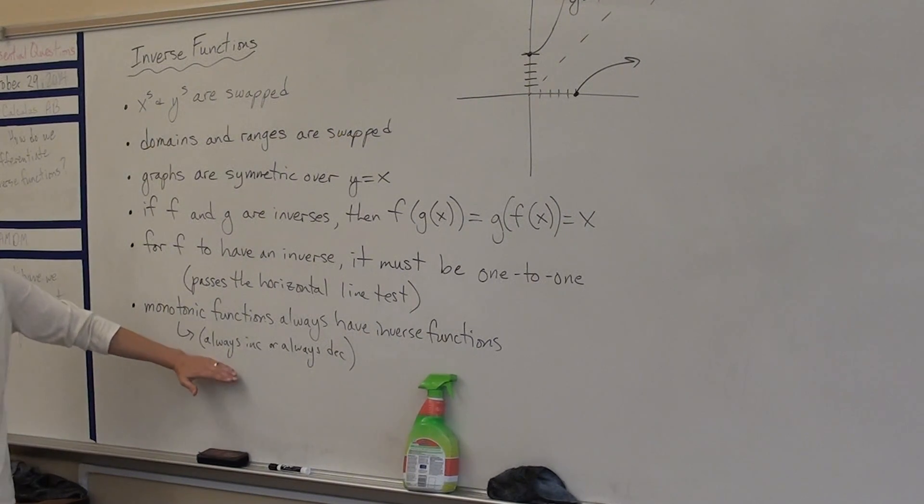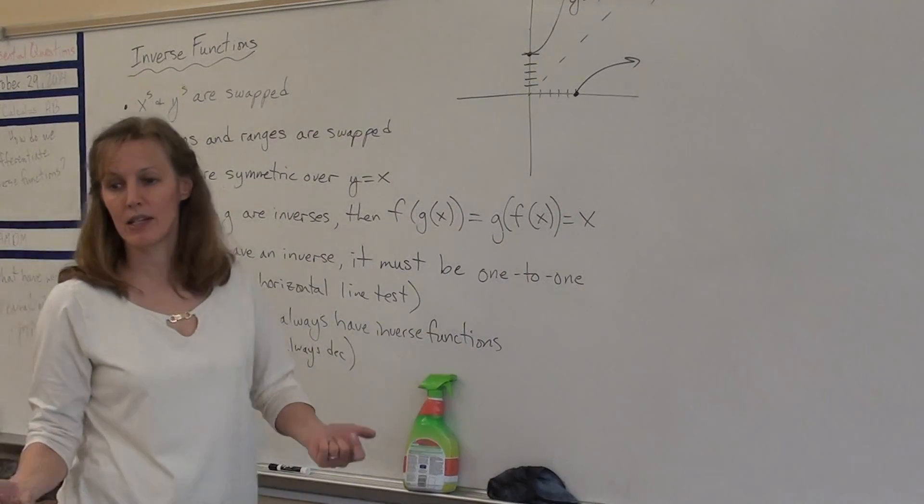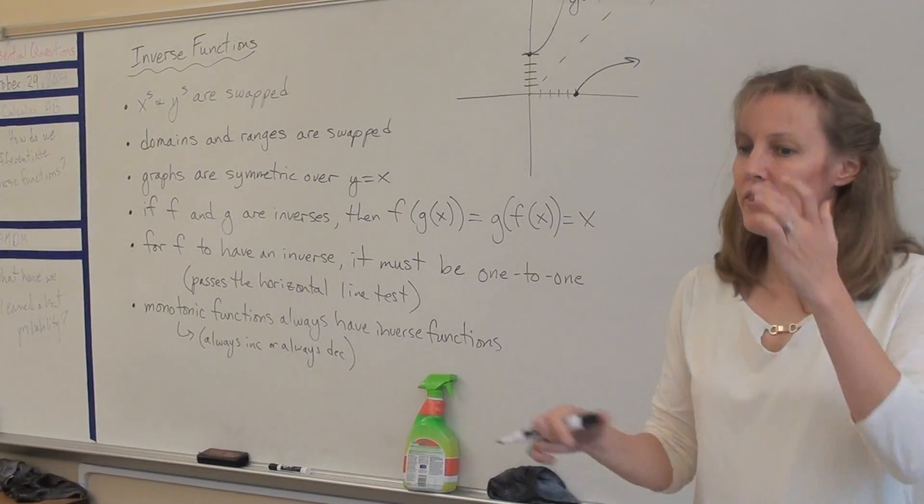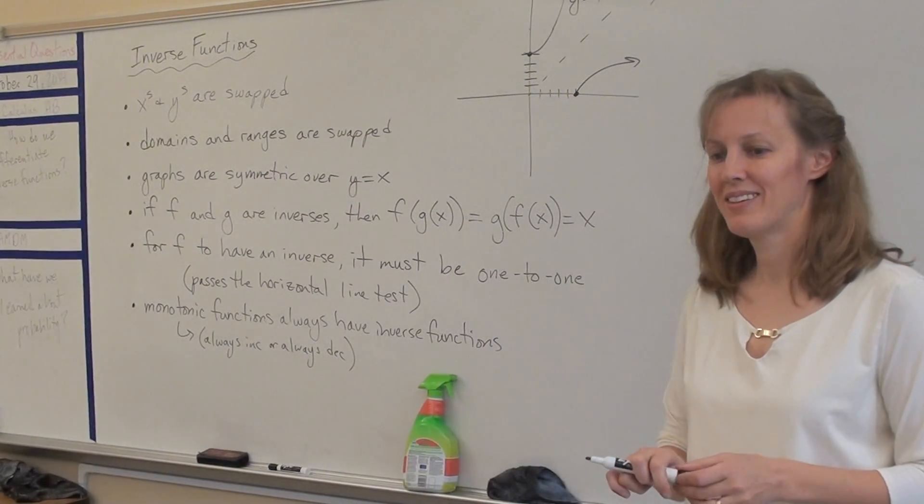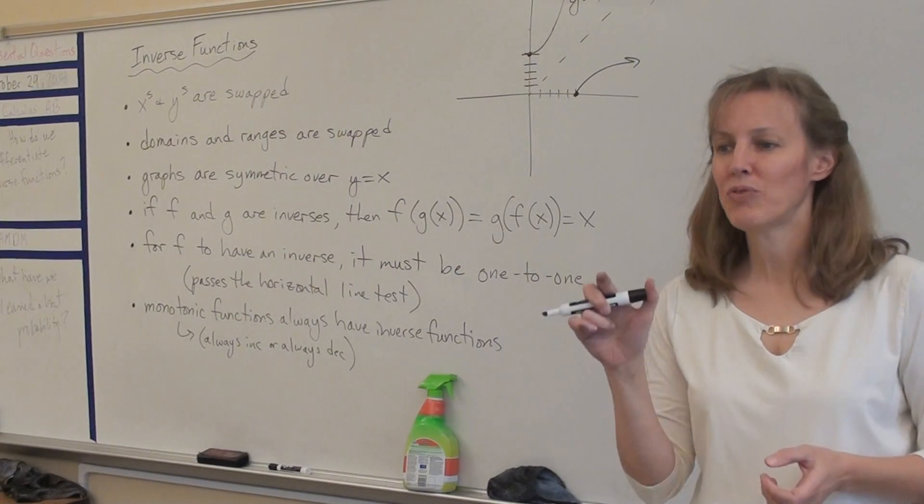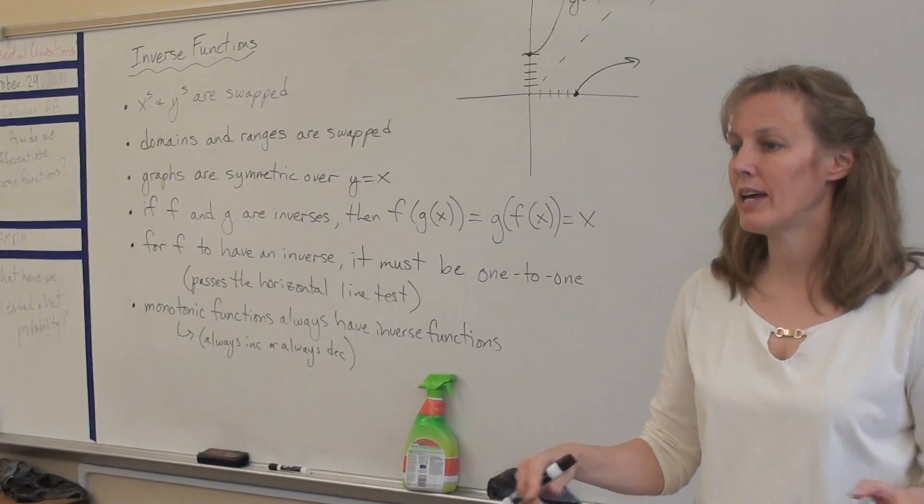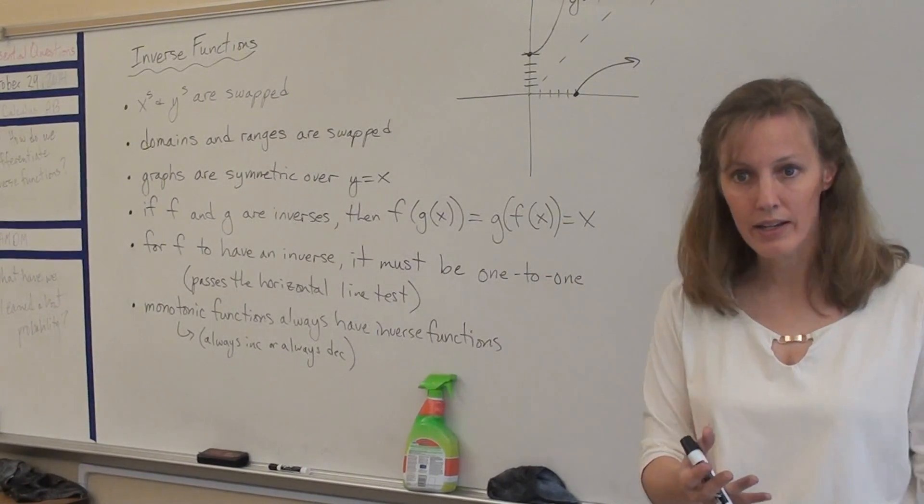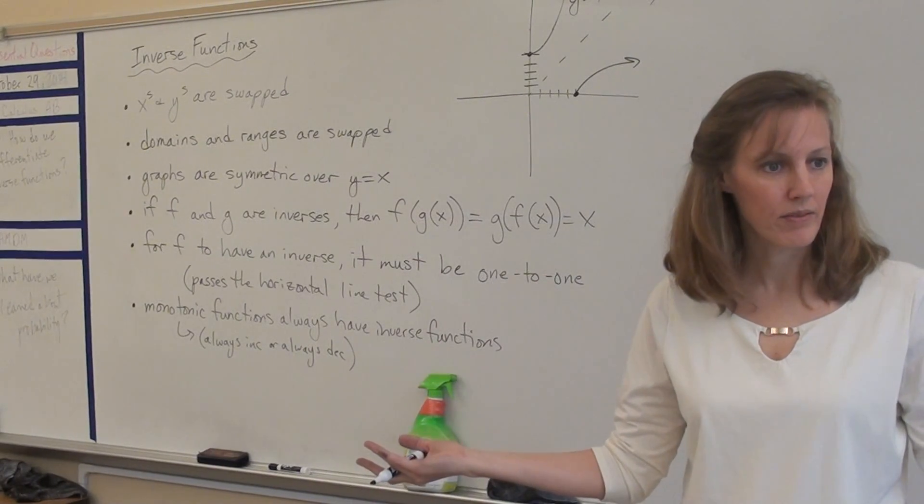How would we know if a function was monotonic? How would we know if a function is always increasing? What tells us if a function is increasing? The first derivative. We would find the first derivative and make a sign line. And if it's always positive or always negative, then the function is monotonic.